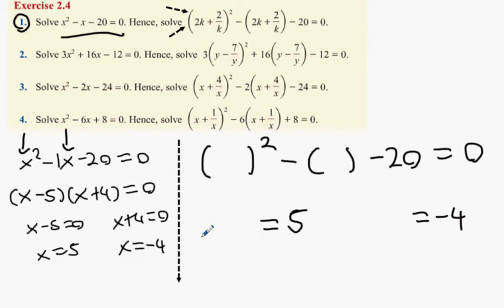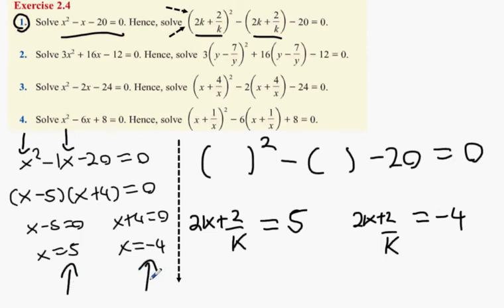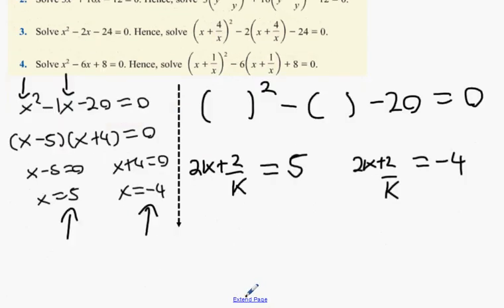So whatever this something is, it will either equal 5 or it will equal minus 4. Now, what is the something we're using? We're now replacing that with 2k plus 2 over k. You solve the normal equation, and whatever is in the brackets in the hence equation is equal to the answers from the first part. Every time.